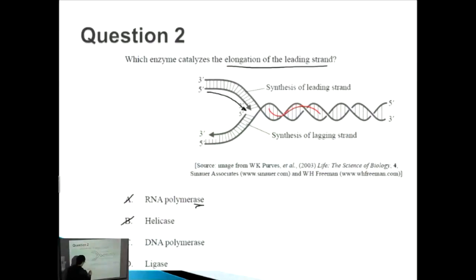DNA polymerase - yes, that does make sense. It adds on extra nucleotides to the leading strand and that causes the elongation of the leading strand during DNA replication. This one seems right.